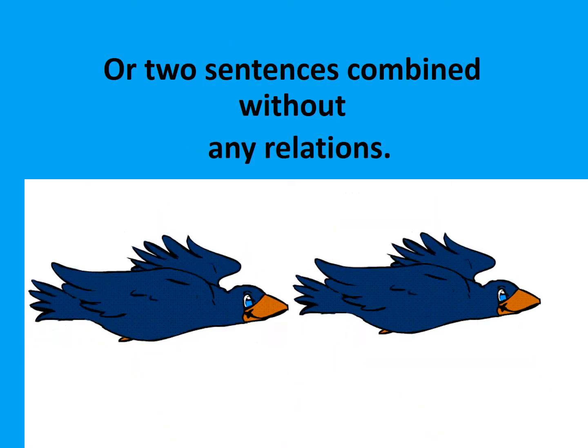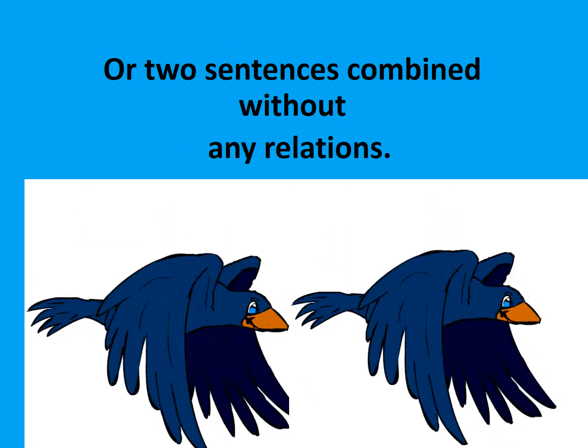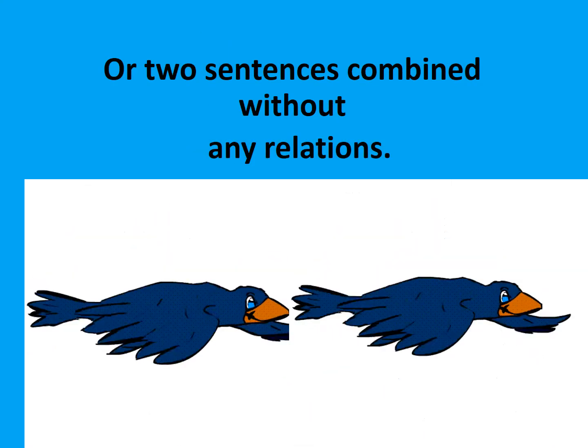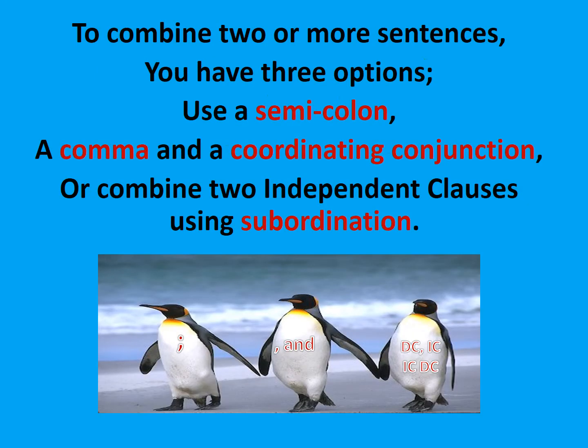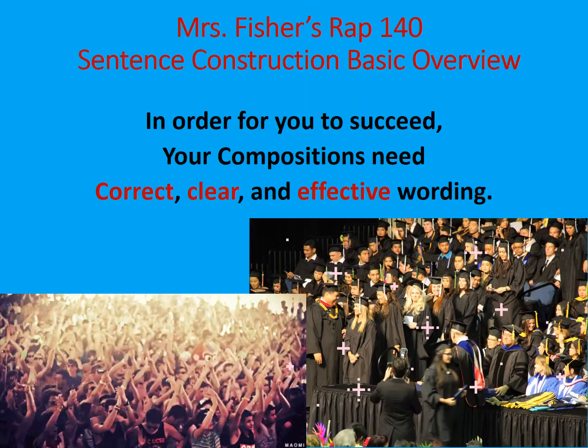A run-on sentence is incorrect punctuation, or two sentences combined without any relation. To combine two or more sentences, you have three options: use a semicolon, a comma, and a coordinating conjunction — or combine two independent clauses using subordination.